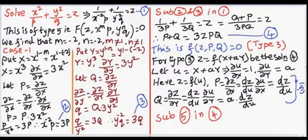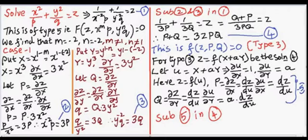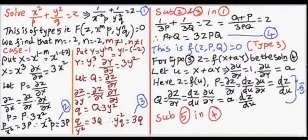For case number 1, we put X = x^(1-m). Since m = -2, it becomes X = x^(1-(-2)) = x³. Differentiating, ∂X/∂x = 3x². Let P = ∂z/∂X. We can write ∂z/∂x = (∂z/∂X) · (∂X/∂x).